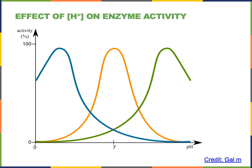Some enzymes will have an optimal pH that is much higher because they are operating in an environment with a relatively high pH. For example, the small intestine has a relatively high pH, and there are many digestive enzymes secreted into the small intestine to facilitate digestion of food. These enzymes have an optimal pH matching the higher pH typically found in the small intestine.